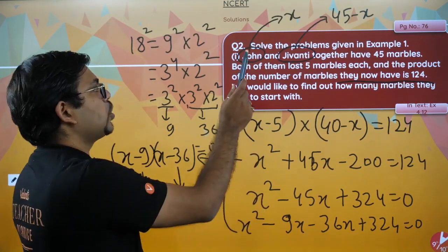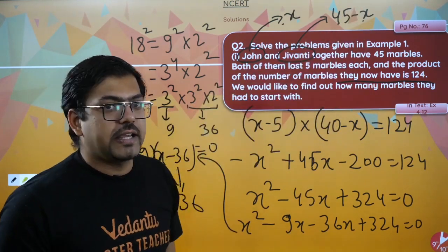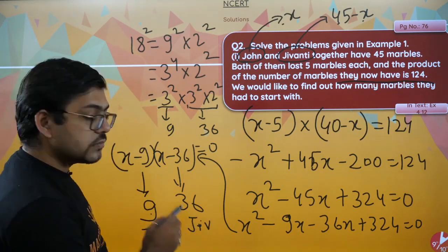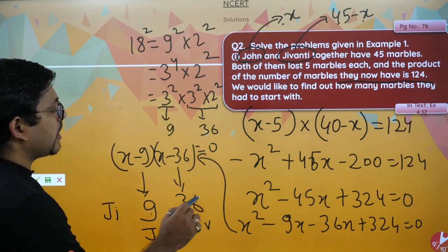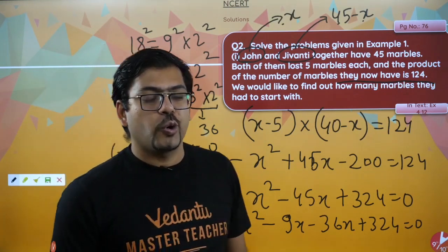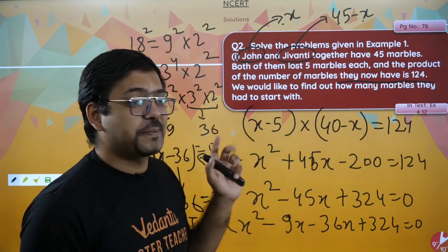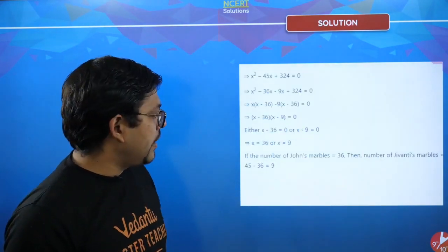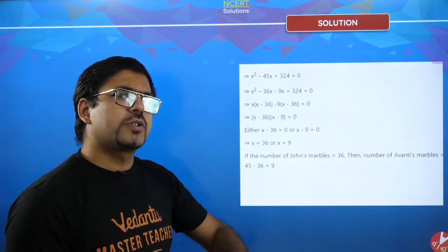John has 9 marbles. If John has 9, then Jivanty has 45 minus 9, which is 36. Or John has 36 and Jivanty has 9. So one has 9 and one has 36 — that is the confirmed answer. The equation was: x minus 5 into 40 minus x equals 124, and we have solved it. Either John has 36 or 9.